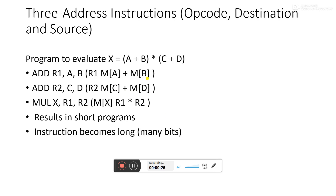Let's take an example: x = (a + b) × (c + d). We have four operands: a, b, c, and d. X is the memory location where the result must be stored. Now let's look at how the three address instruction handles this.